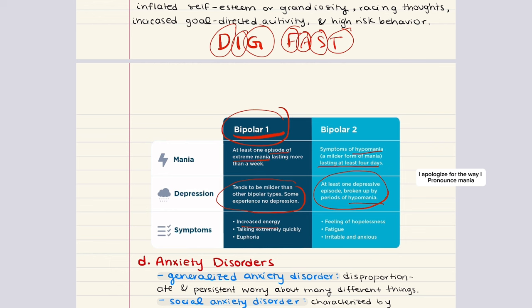The neurological basis of mood disorders primarily centers around the monoamine or catecholamine theory of depression. This theory suggests that mood disorders are linked to levels of certain neurotransmitters — specifically norepinephrine and serotonin. An excess of these neurotransmitters in the synaptic gap is believed to lead to mania, while a deficiency is associated with depression. However, recent research indicates that the relationship between neurotransmitter levels and mood disorders is far more complex than this theory suggests.